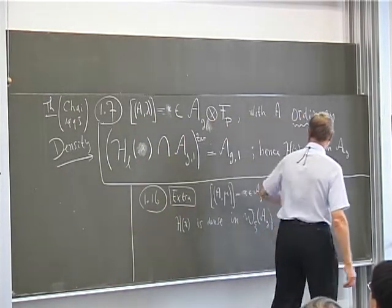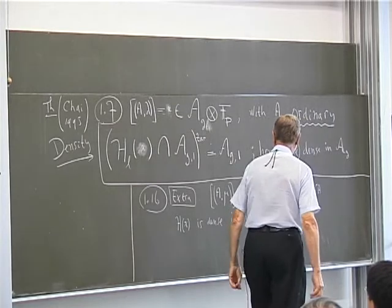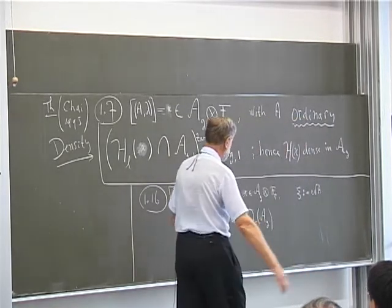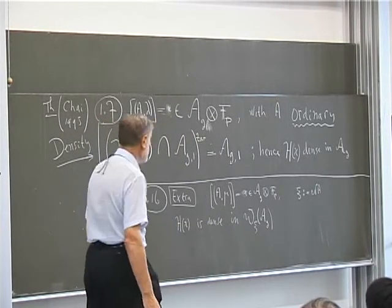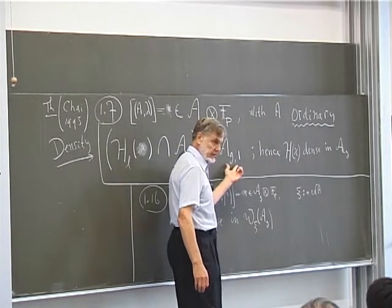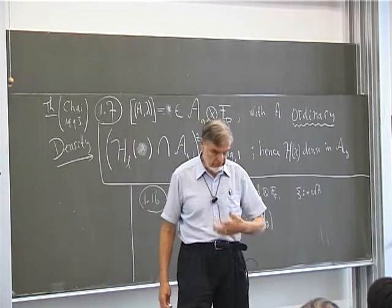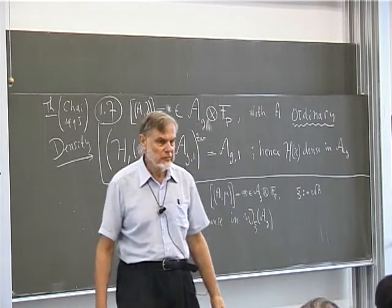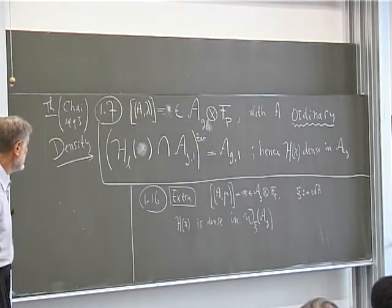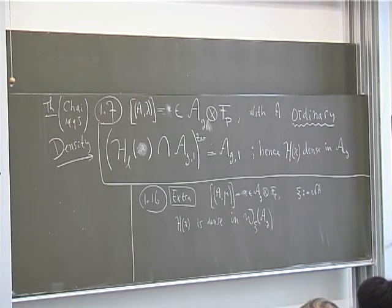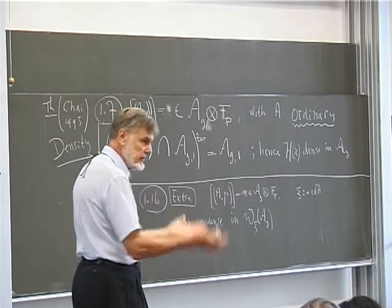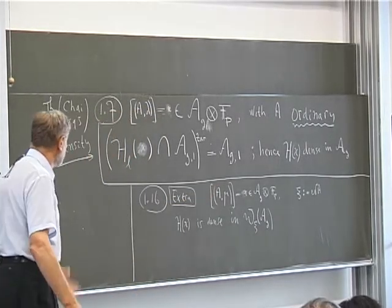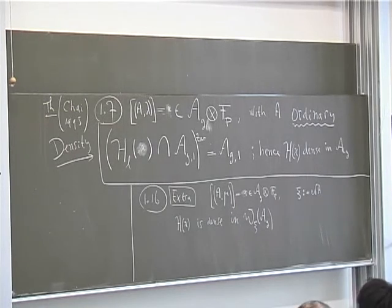I have to explain what script H is, what script H_L is, and what 'ordinary' means. Whenever I say 'dense' I really mean Zariski dense and omit the word Zariski. I assume you know what the moduli space of abelian varieties is — you can define it, à la Mumford, over Z, and then reduce mod p. That's a very interesting object and the main animal in our zoo.